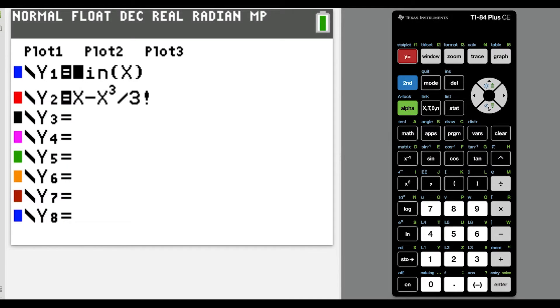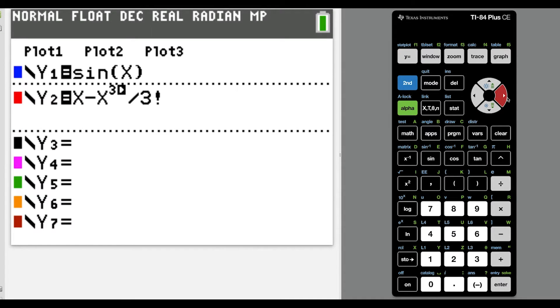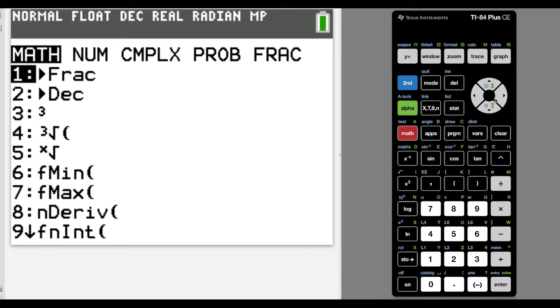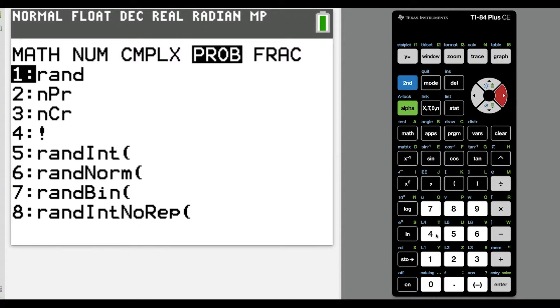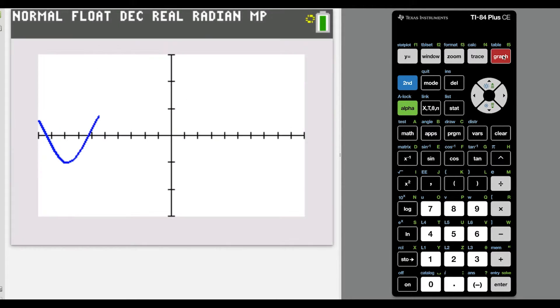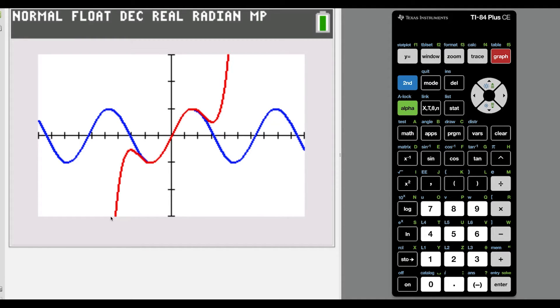So just to highlight this concept a bit more, let's say I add on the next term. If I go out to plus x to the fifth over 5 factorial, so we go out a little bit further. So 5 factorial, we're just going to punch in here. And if we graph this one,